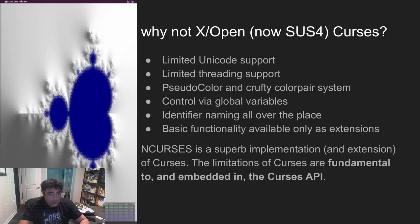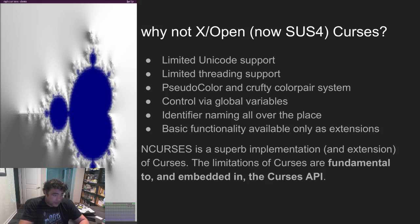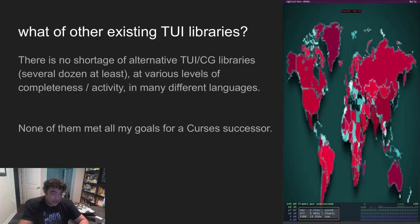So what's wrong with Curses? After all, it's been around for over 40 years, making it one of the few pieces of a modern Unix system older than I am. Well: limited Unicode support, poor threading support, palette index color, a crufty color pair system, control via global variables, and other issues. NCurses is a superb implementation of Curses and takes it about as far as it can go. The limitations of Curses are fundamental properties of its API.